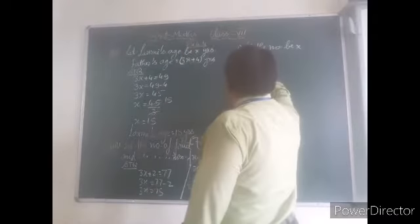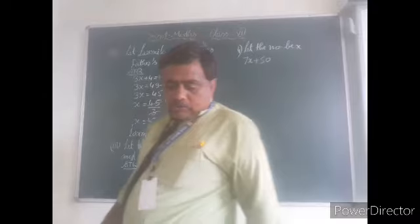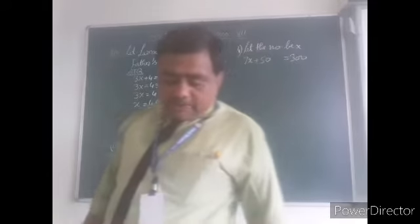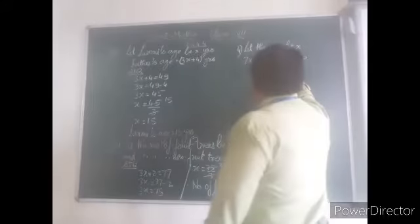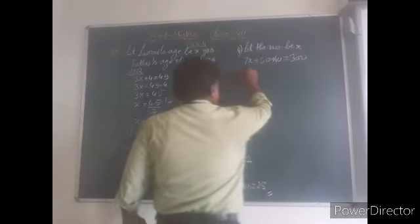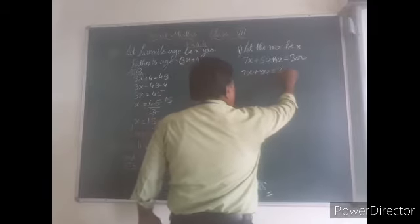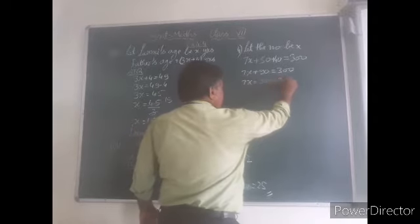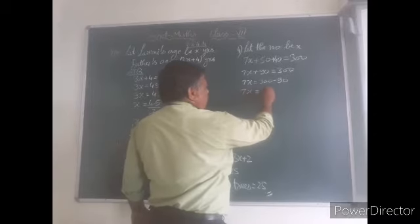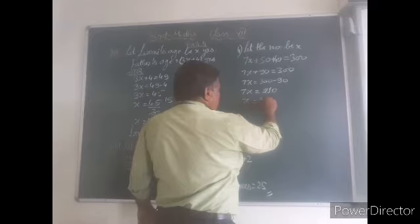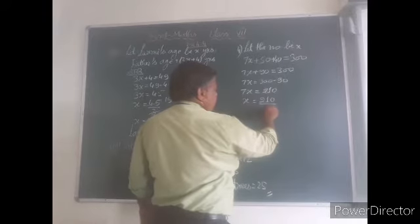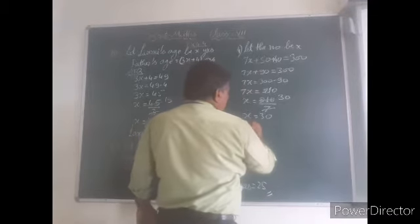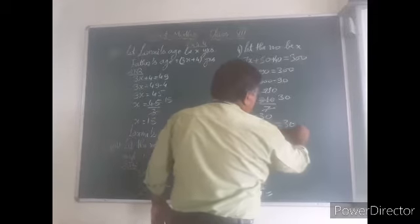And add 50. You reach the triple century — 300. You still need 40. So, 7X plus 90 equal to 300. Transpose 90: 7X equal to 300 minus 90. 7X equal to 210. X equal to 210 divided by — X equal to 210 upon 50.